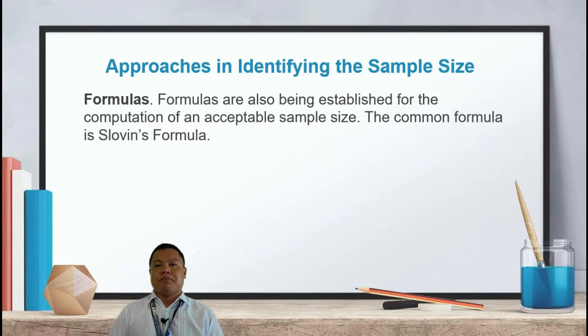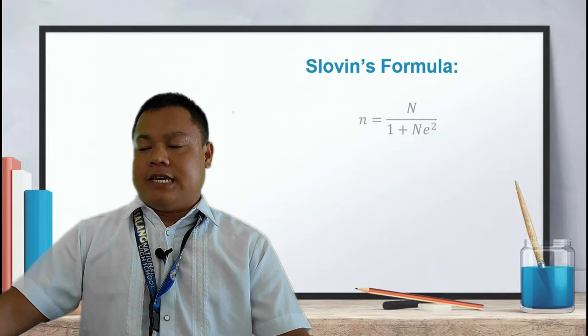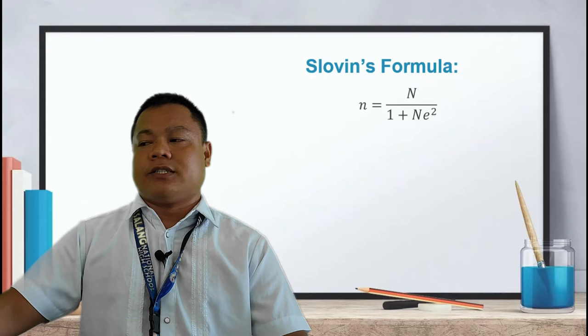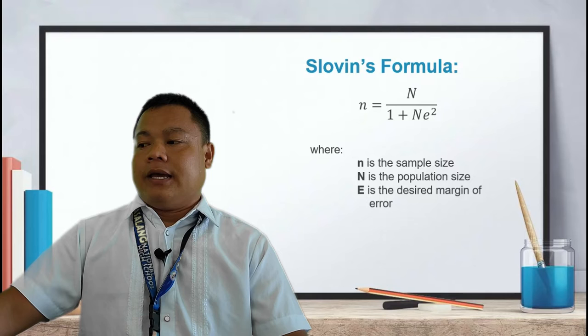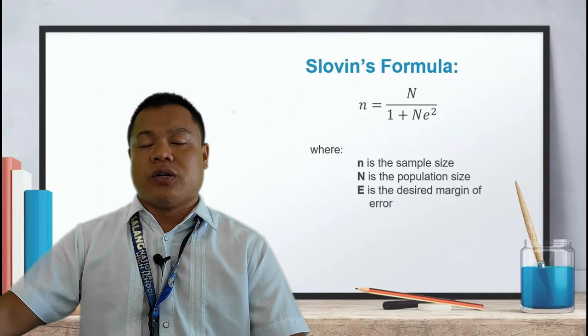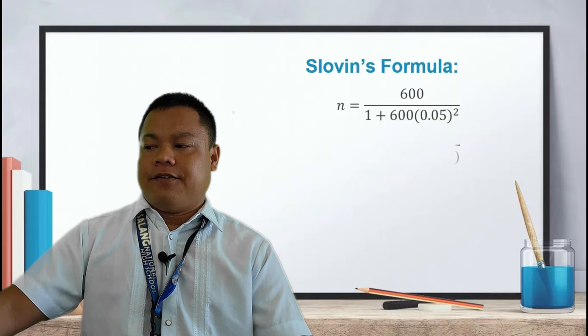The most common approach in determining sample size is using formulas. The most common is Sloven's Formula: n = N / (1 + N·e²), where n is the sample size, N is the population size, and e is the margin of error — which pertains to the desired percentage of accuracy of your research results.